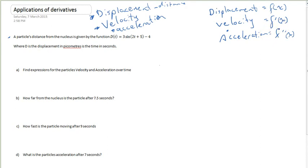We can find the expressions for velocity and acceleration by taking the function d(t) = 3sin(2t+5) - 4 and finding the derivative of it. This is stuff you should be fairly comfortable with now. The derivative of 3sin(2t+5) - 4 will be 6cos(2t+5), and that minus 4 is going to disappear off the end there. So that's our velocity function.